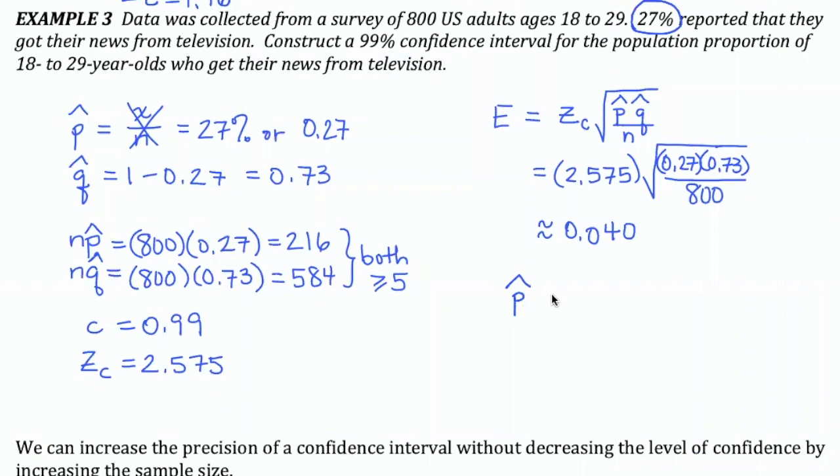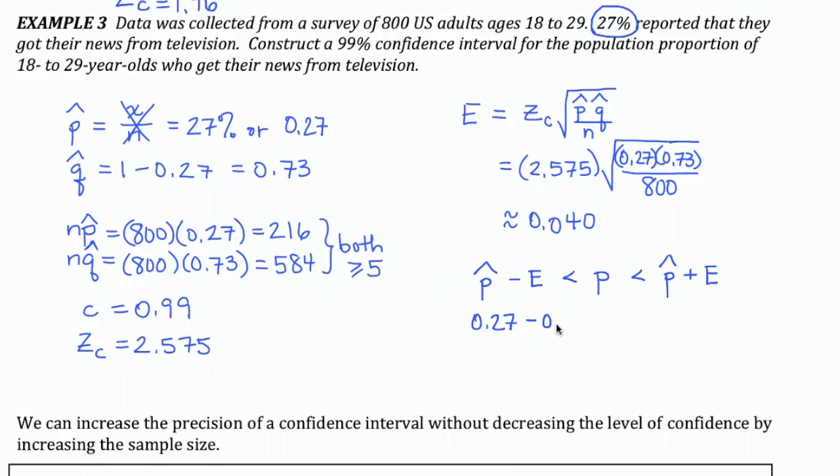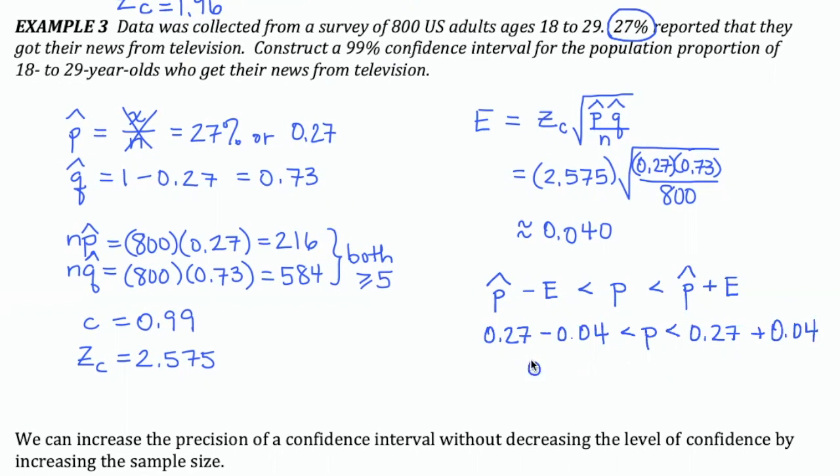And the final step is then to subtract and add that to create the interval for the population proportion of success. So if you subtract, you get 0.23 as a lower boundary or 23%. And then as an upper boundary, you get 0.31, which is the same as 31%. Since our point estimate for the population proportion of success was 27%, we use that to determine we can say with 99% confidence that the population proportion of 18 to 29 year olds who get their news from TV is going to be between 23% and 31%.